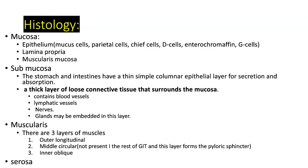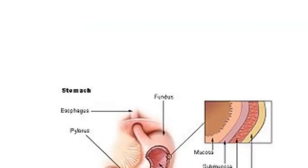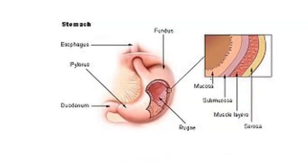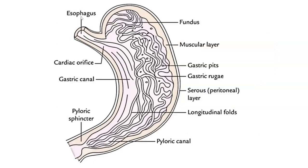The muscularis propria of the stomach has three layers of muscle, unique to the stomach and not found in the rest of the digestive tract: the outer longitudinal muscle, the middle circular muscle (which forms the pyloric sphincter at the end of the stomach), and the inner oblique muscle. Moving from mucosa to submucosa to muscularis layer, the outer layer is the serosa — the serosal peritoneal layer. Key landmarks include the fundus, gastric pits, pyloric canal, and pyloric sphincter.